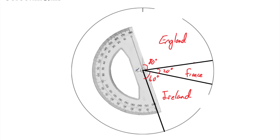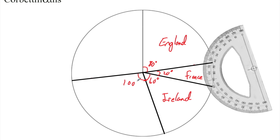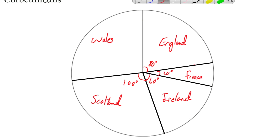Next we've got Scotland and Wales, both 100 degrees. We place the protractor center on the center of the pie chart, zero on the last line, and go around to 100 degrees — past the right angle at 90 and then another 10 — making it an obtuse angle. Draw the line for Scotland, mark the 100 degree angle. Then the final remaining sector is Wales, also 100 degrees. Measuring from zero to 100 confirms it's correct. We now have our completed pie chart labeled England, France, Ireland, Scotland and Wales.